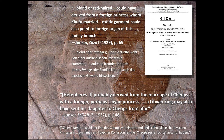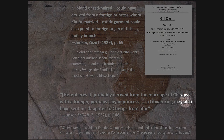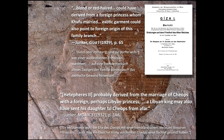Hermann Junker bought into all of these foreign connections. Quotes from his first volume of his lengthy Giza series from 1929, and later in an article from 1932, suggest that the 'blonde or red-haired could have derived from a foreign princess whom Khufu married,' and that the 'exotic garment could also point to foreign origin of this family branch.' He wrote that 'Hedda Paris probably derived from the marriage of Cheops with a foreign, perhaps Libyan princess' and that 'a Libyan king may also have sent his daughter to Cheops from afar.' So the lines were blurring between the popular press, the scholarship of the time, and even fiction.